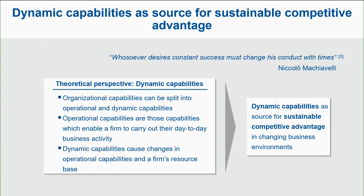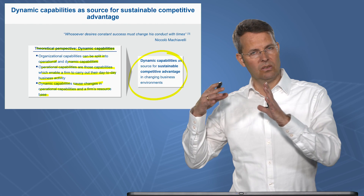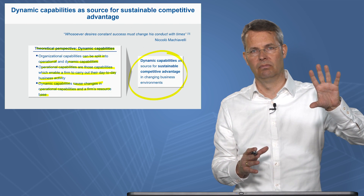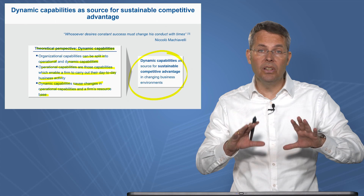However, how can dynamic capabilities help you? Well, they can first of all be split into operational and dynamic capabilities. Operational capabilities are those capabilities which enable firms to carry out day-to-day business activity. Dynamic capabilities, on the other hand, cause changes in operational capabilities and a firm's resource base. So in general, dynamic capabilities serve as a source for sustainable competitive advantage — you not only have capabilities that make you successful over a long time, but you also have the capabilities to be agile.